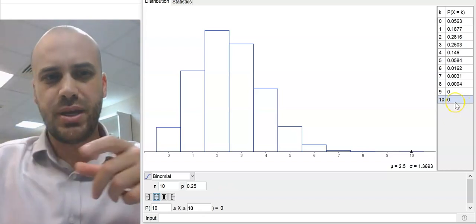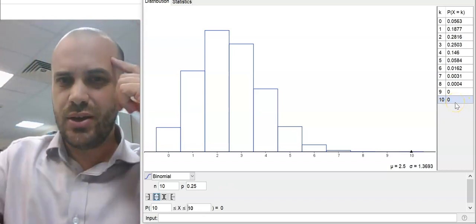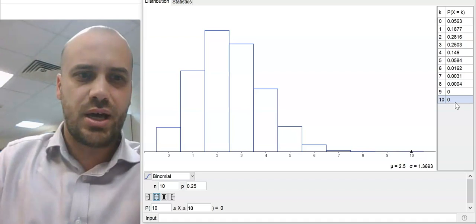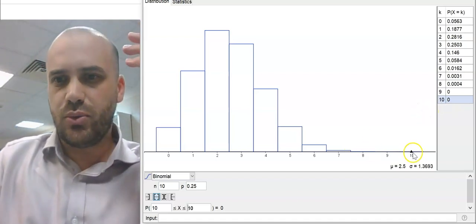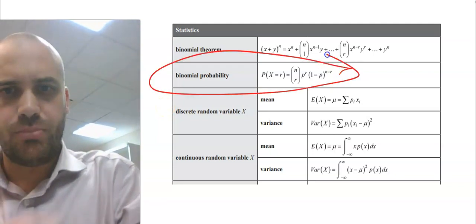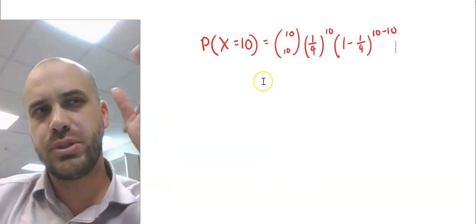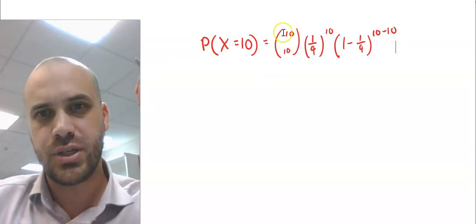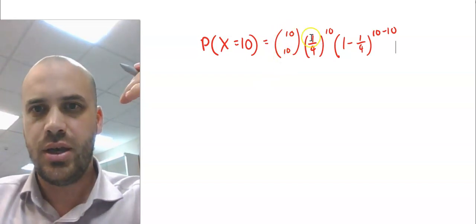And we want to get exactly 10 correct. Alright, and it's spitting out the number 0 there. Well, that can't be true. Like, there must be some small chance that we can get 10 out of 10. Here's the relevant part of my formula sheet. I'm doing binomial probability. So, if I want 10 successes from 10 trials, it's going to be 10c10